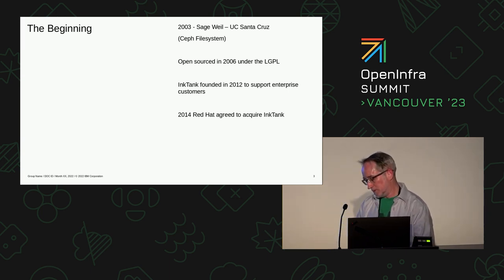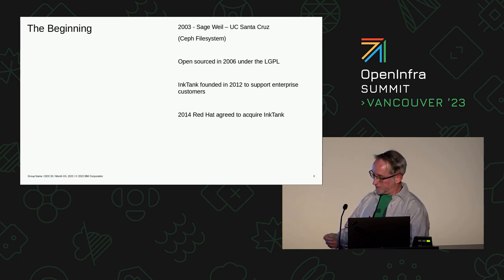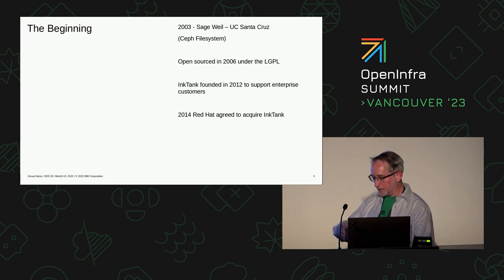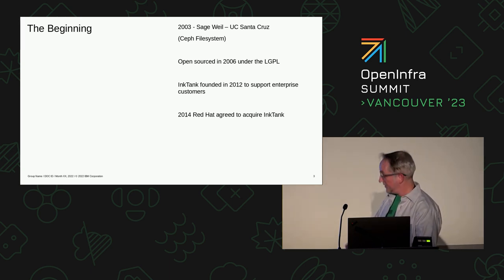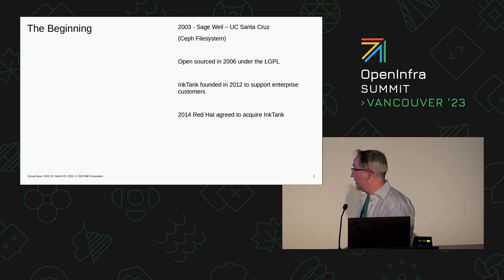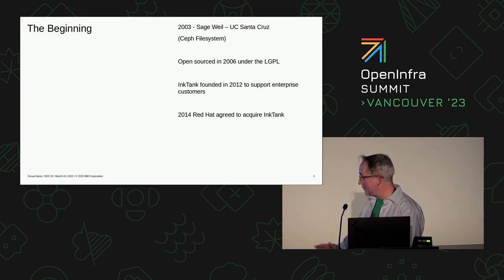This first iteration only implemented the Ceph file system. Later in 2006, Ceph was open sourced under the Lesser GNU Public License. In the following years, various institutions, companies, and other developers further helped support development of Ceph. In 2012, the same Mr. Weil was able to found Ink Tank, a company that sold support for Ceph. And in 2014, a company called Red Hat acquired Ink Tank, and here we are.